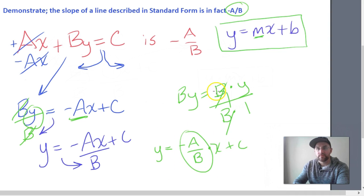And we just demonstrated it mathematically. We provided a proof that the slope of a line described in standard form, which was right here, is in fact negative A over B.